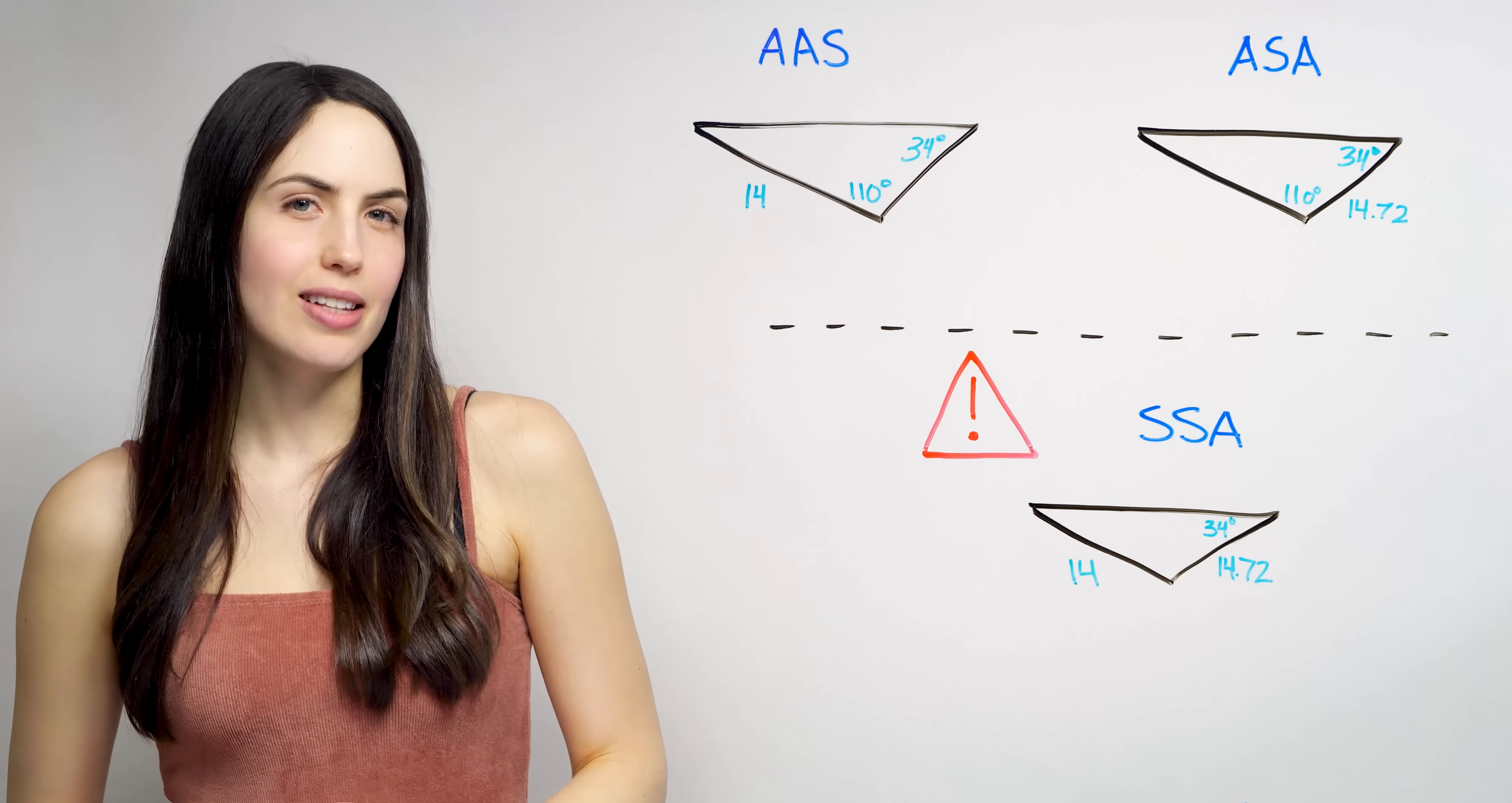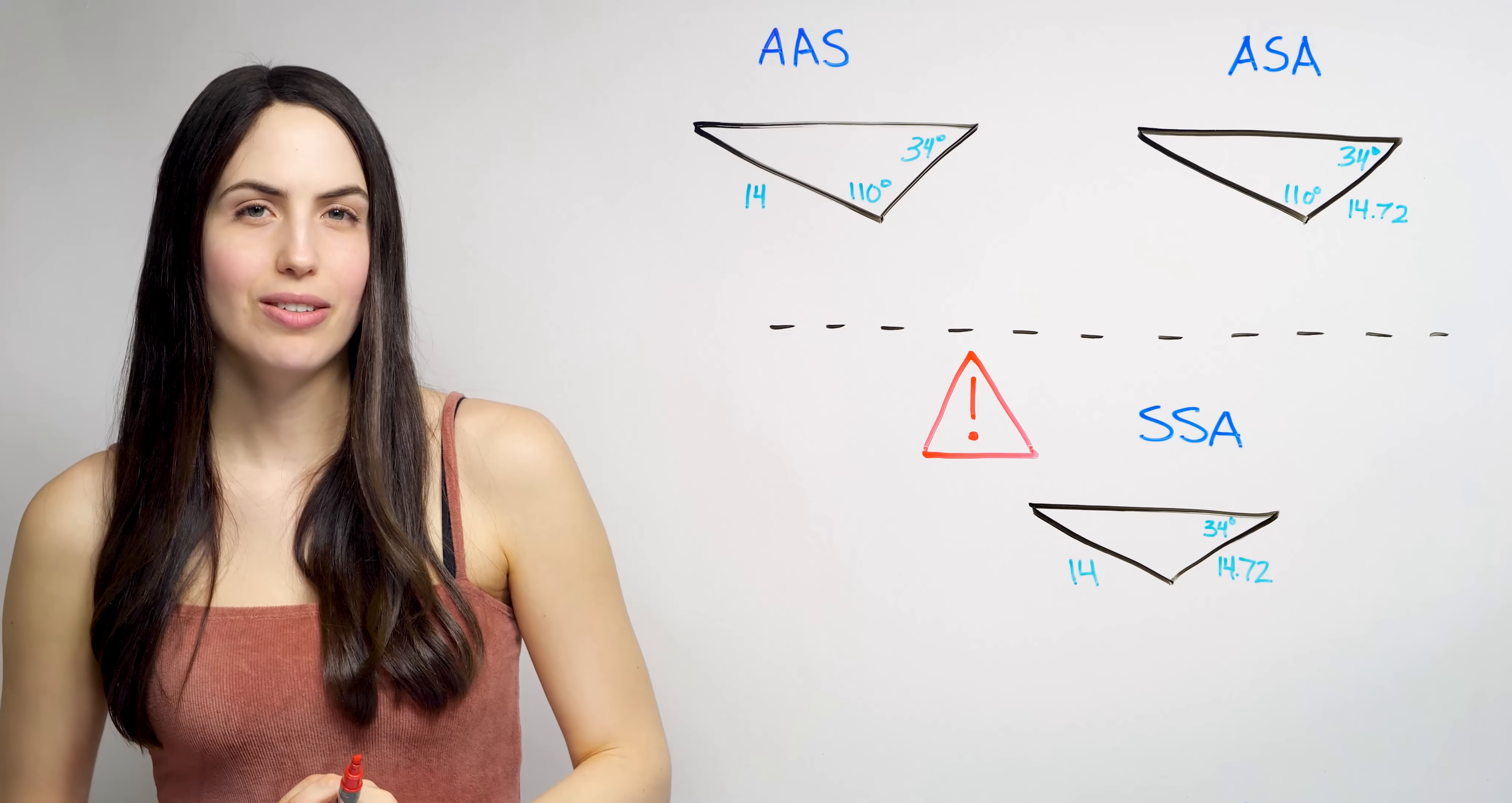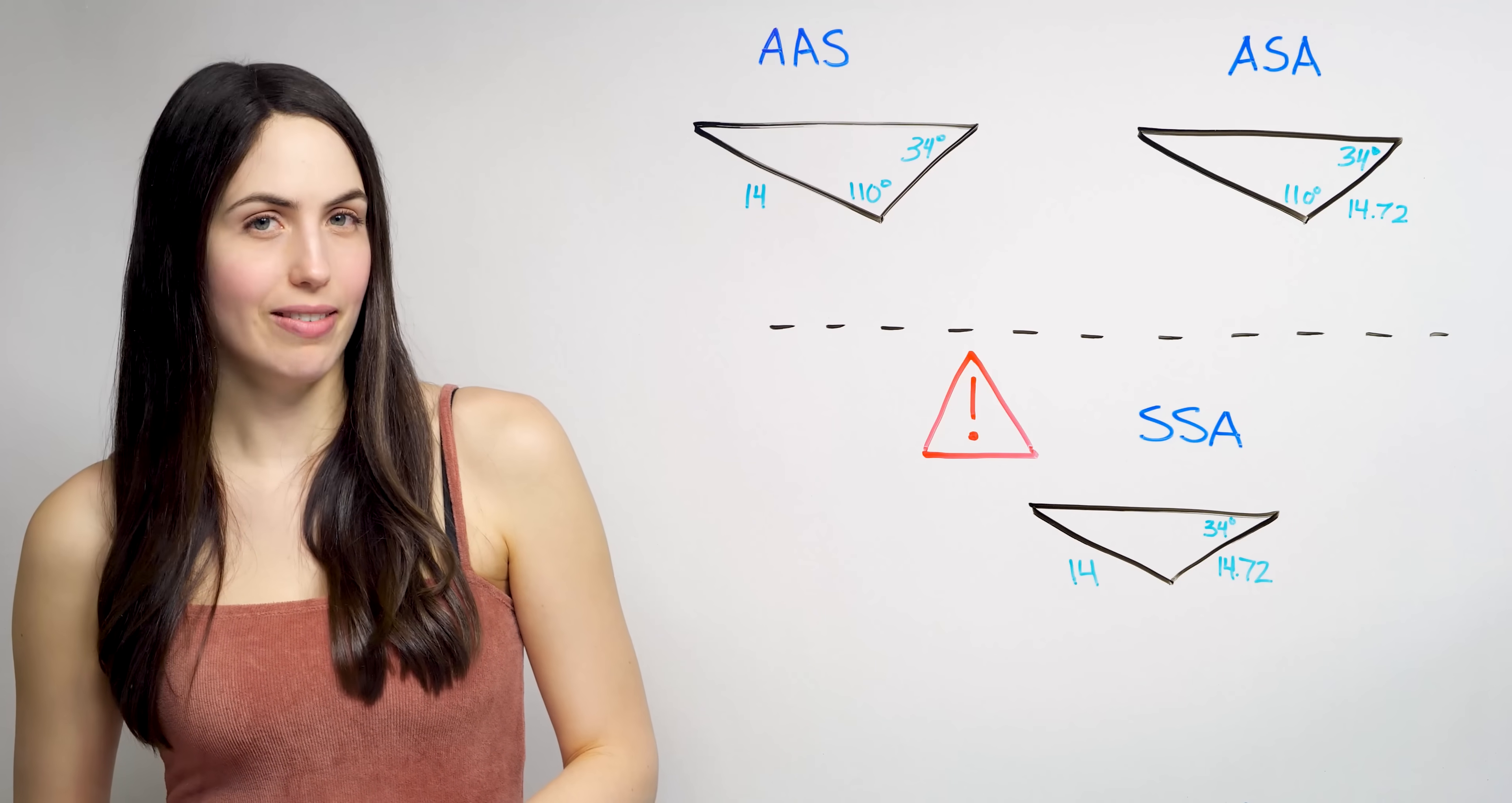You can also use the law of sines for another kind. If you have SSA, two sides and an angle that's opposite one of the sides, you can use the law of sines. And you might get one answer, one solution for your triangle. But you also might find that you have no solution. Or that you have two answers. That there might be two triangles with the measurements you were given.